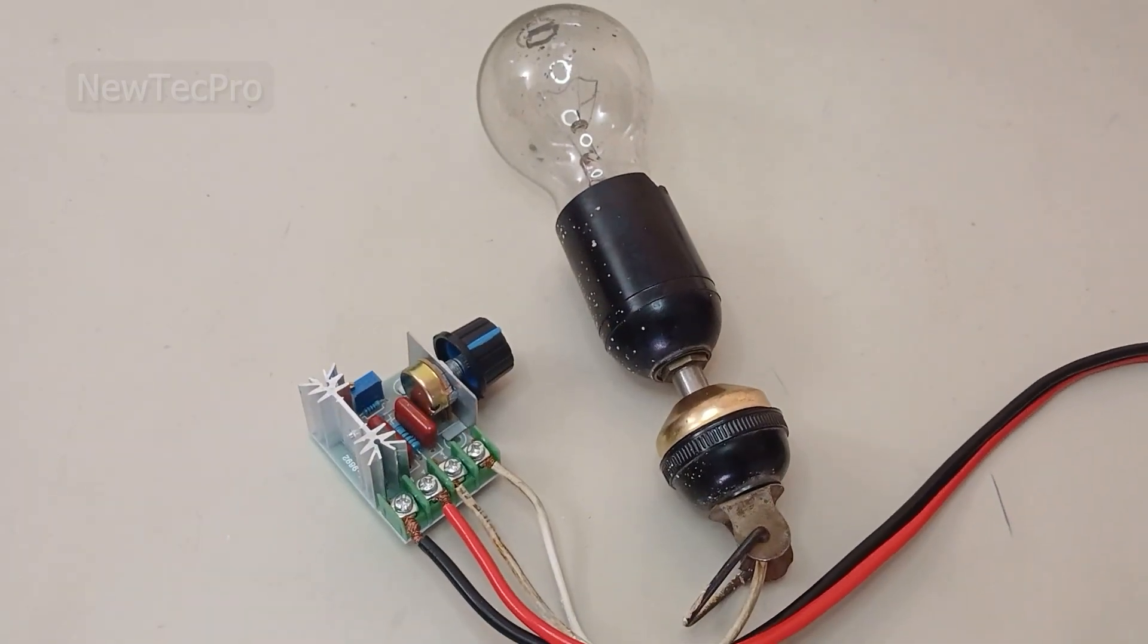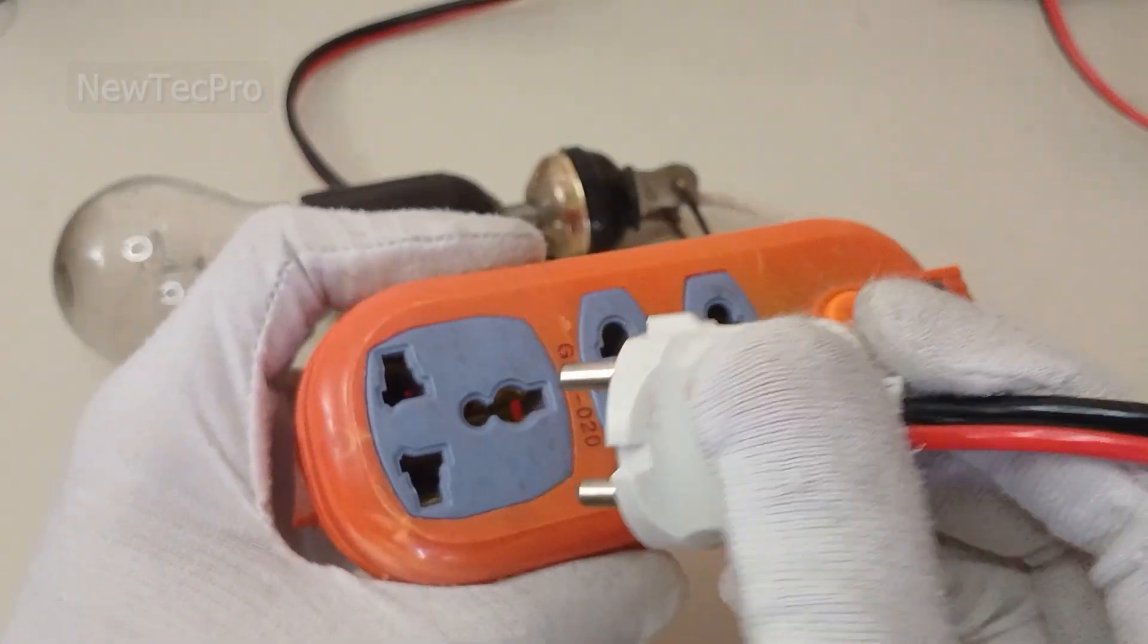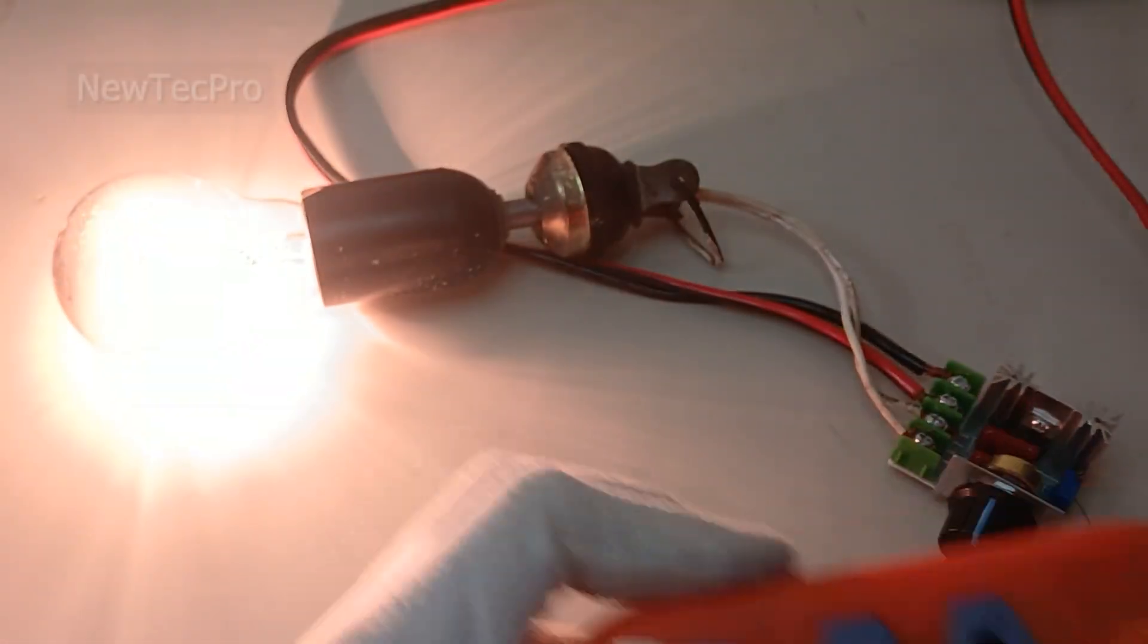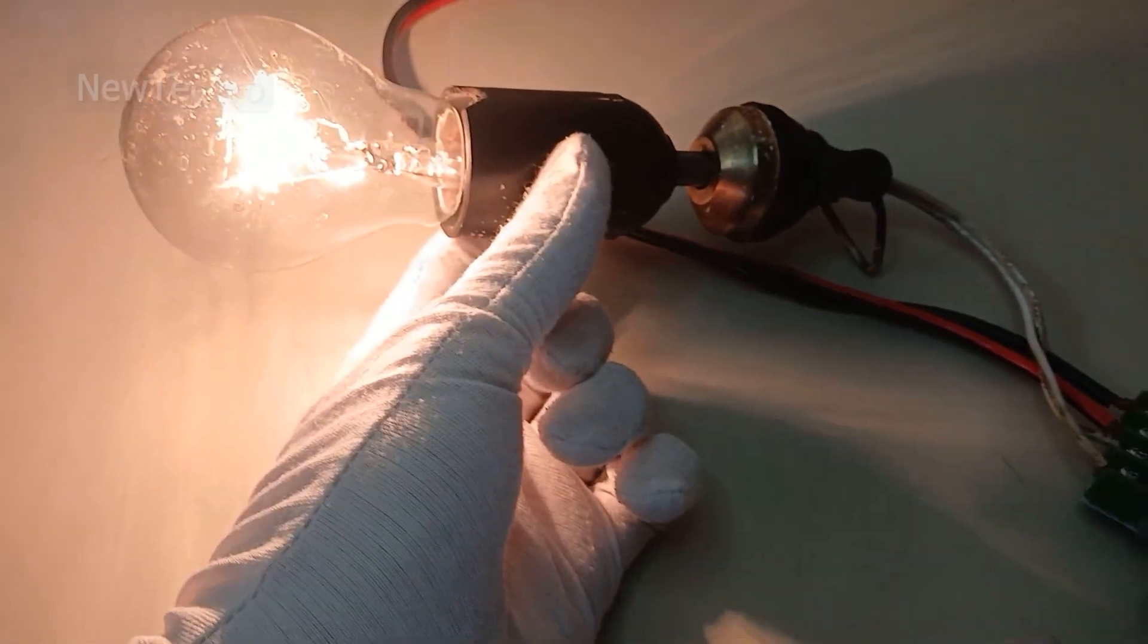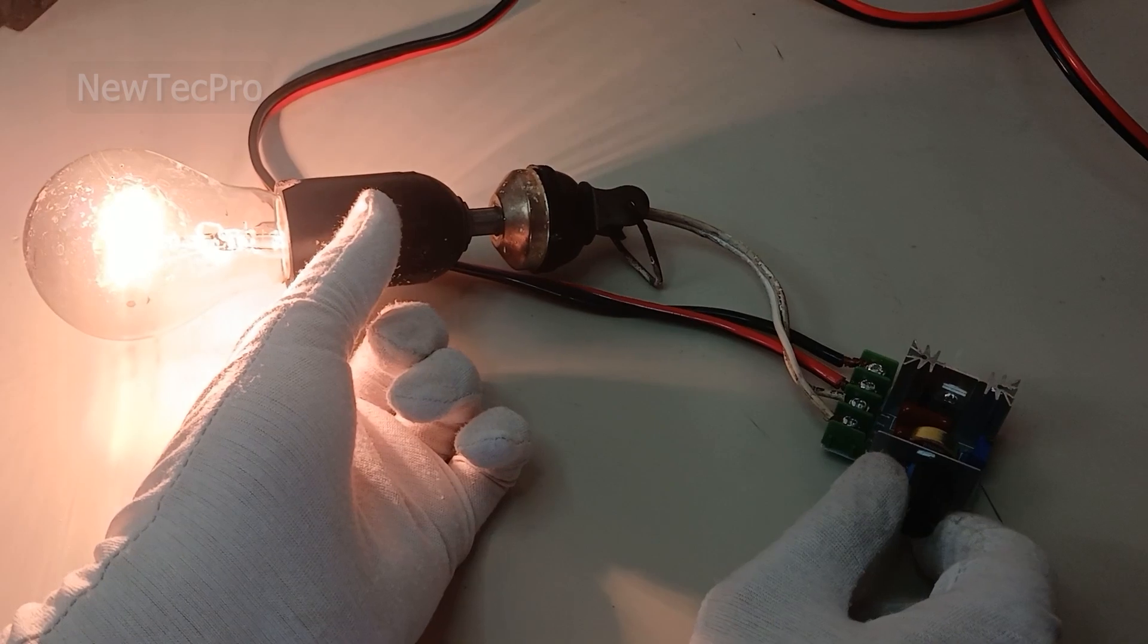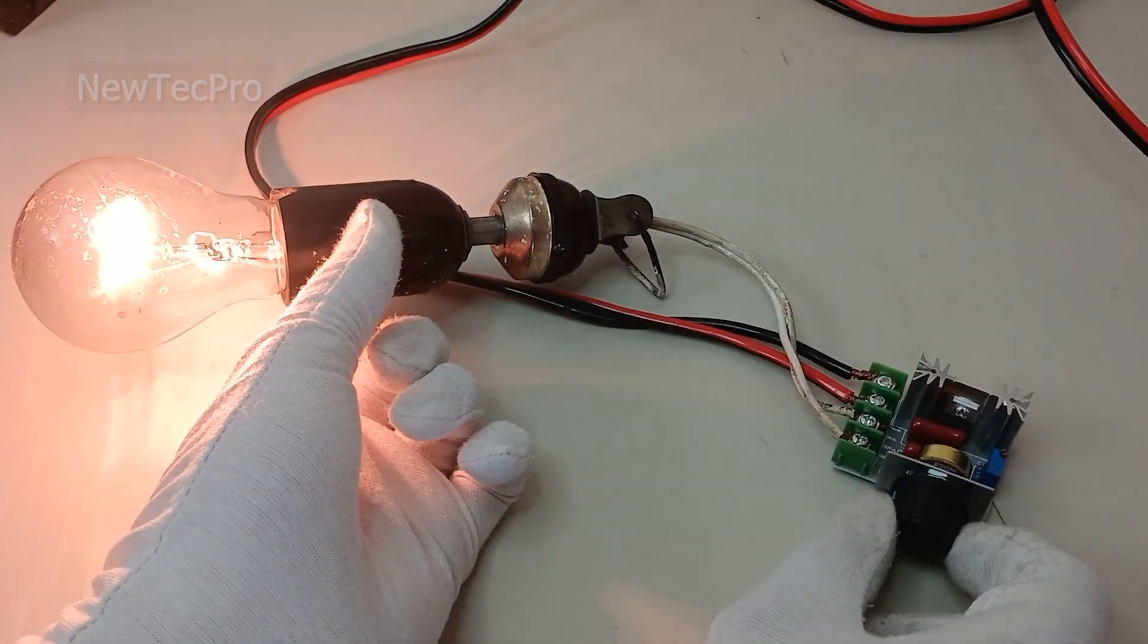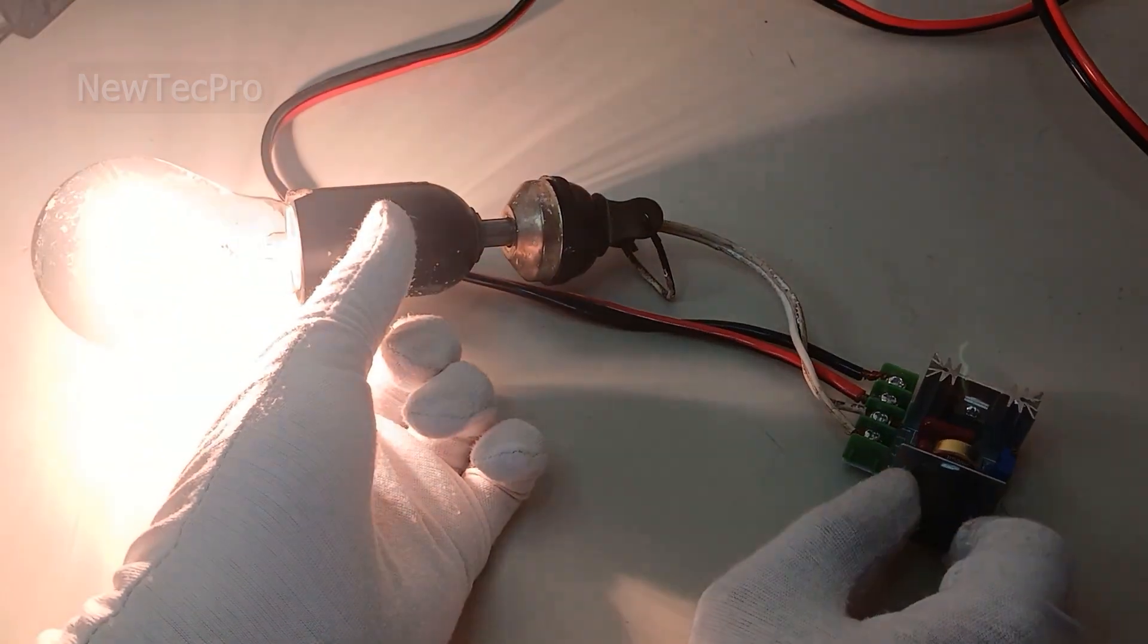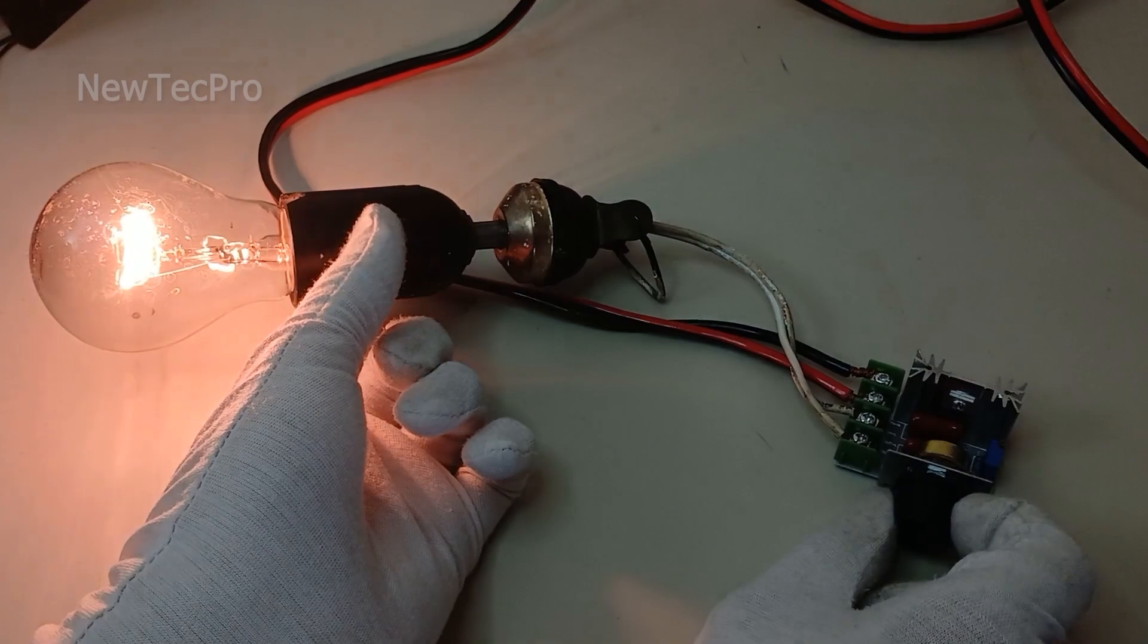Now connect this plug. You can see here the bulb is turned on. Now watch as I turn the dimmer knob.